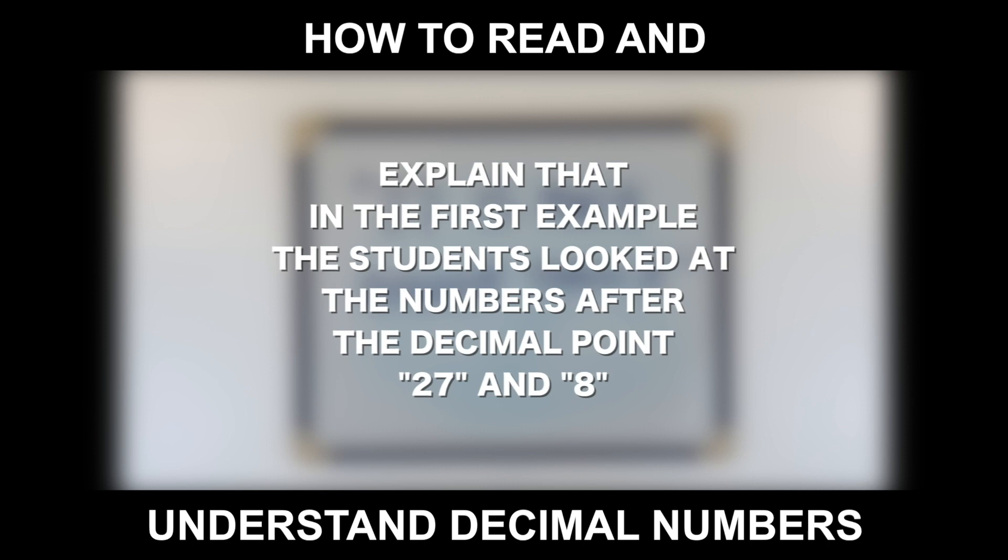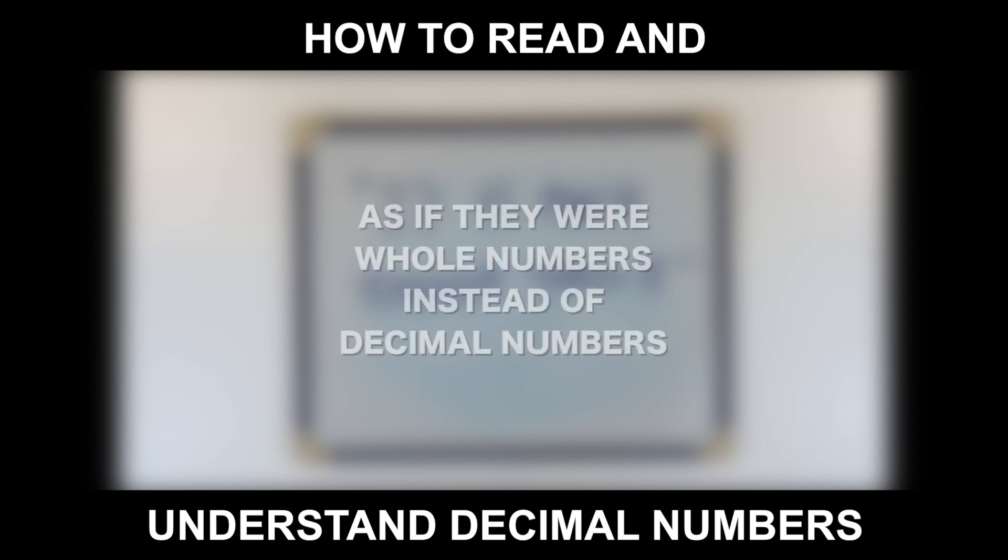Explain that in the first example, the students looked at the numbers after the decimal point, 27 and 8, as if they were whole numbers instead of decimal numbers.